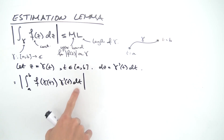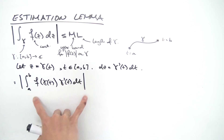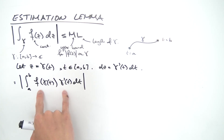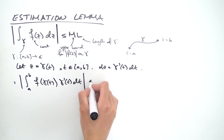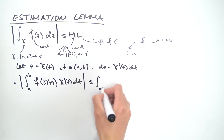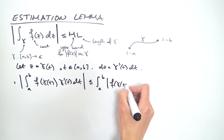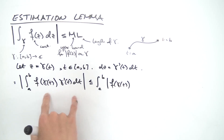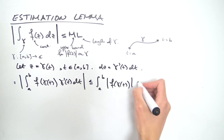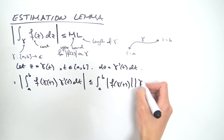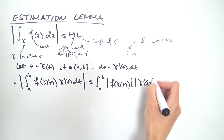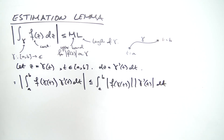We notice we're integrating with respect to a real variable, so we can use the integral inequality proved previously to move the absolute values inside the integral. This becomes less than or equal to the integral from a to b of the absolute value of f(gamma(t)) times the absolute value of gamma'(t) dt.